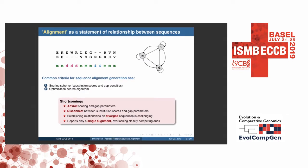But there are some notable shortcomings presently in the field. The first one is that these choices for the substitution scoring matrix and gap penalty parameters are often ad hoc. And there is also this disconnect between choosing the substitution scores and gap penalties, especially when quantifying these related and unrelated parts separately. And moreover, the sequence alignment programs are finding it very challenging to establish a relationship when the sequences have heavily diverged, especially in the twilight zone. And then, finally, we see that most sequence alignment programs actually report only a single optimal alignment, overlooking many other closely competing alignments.